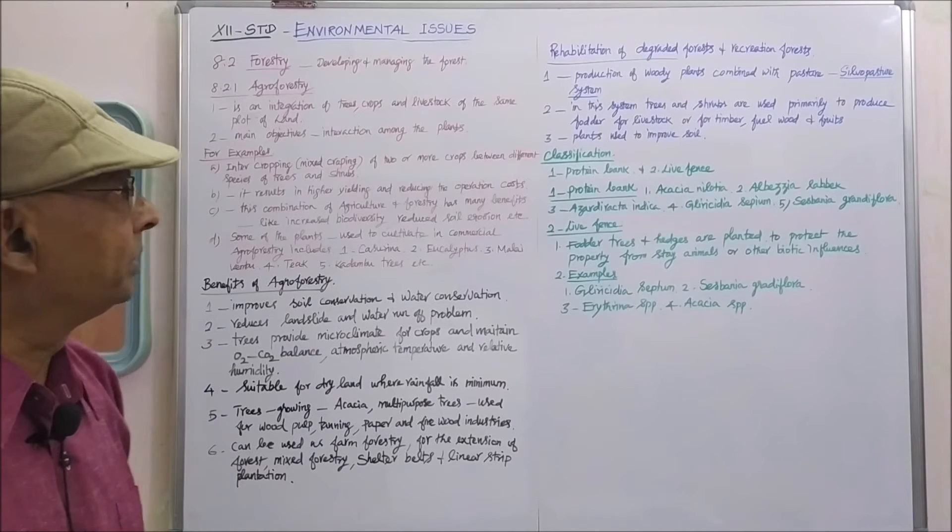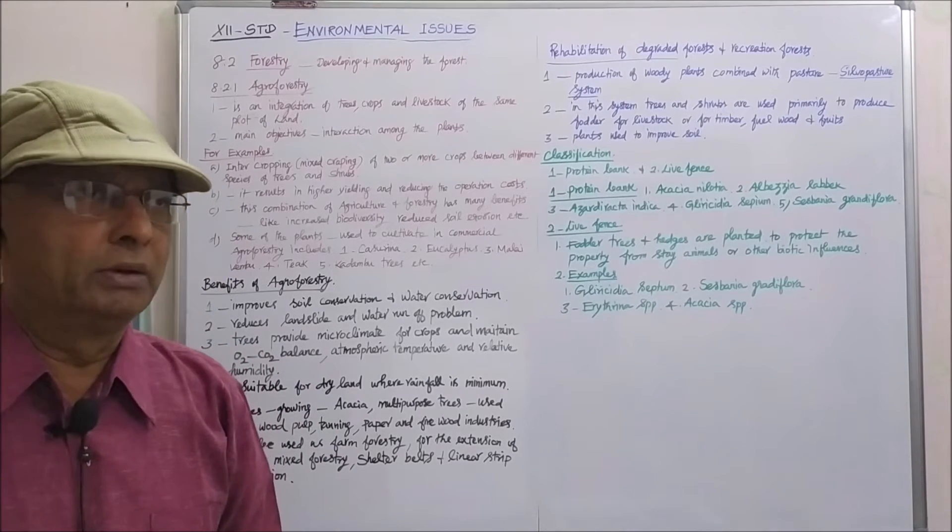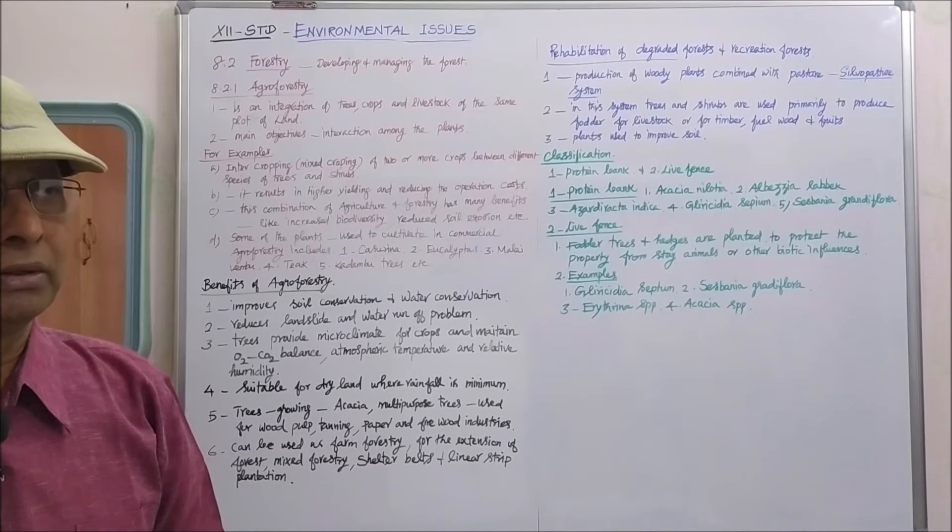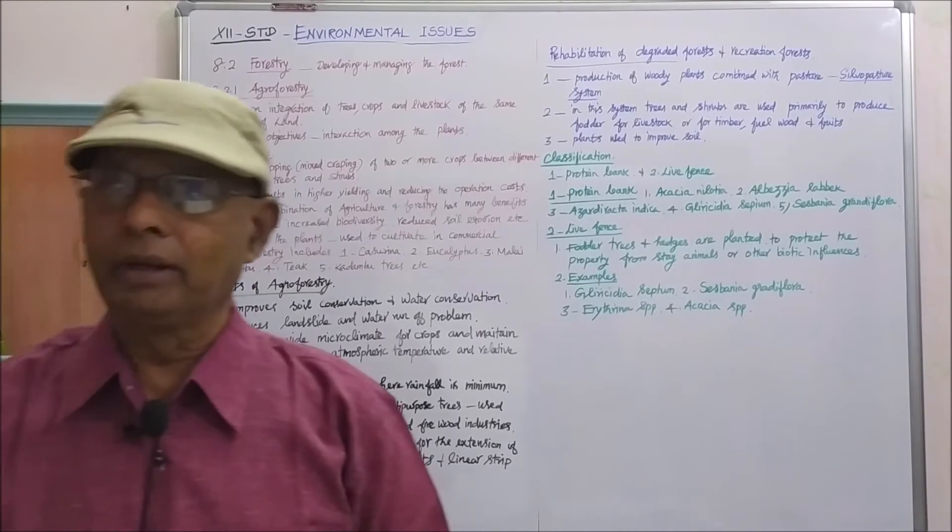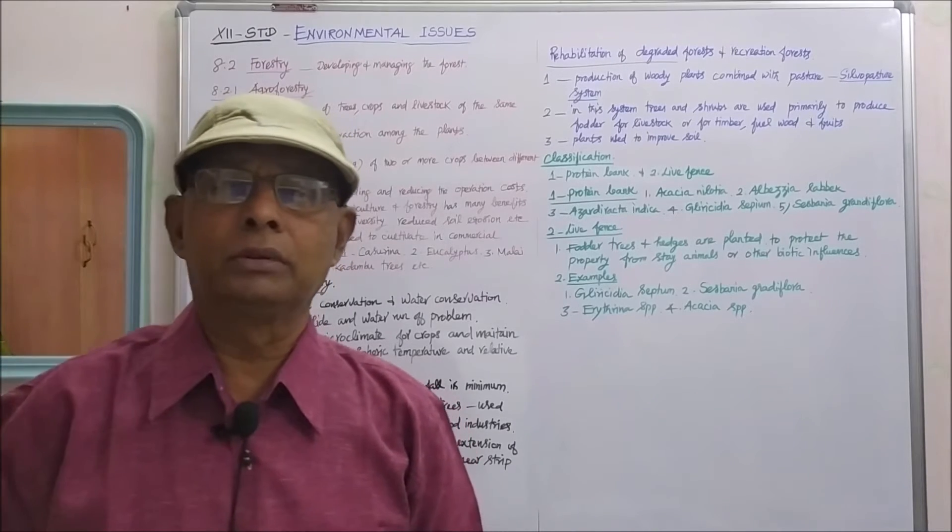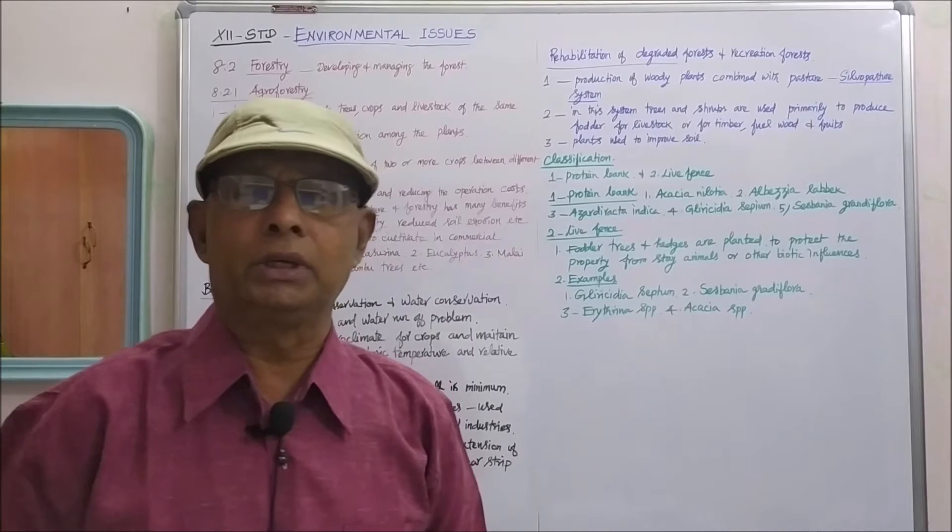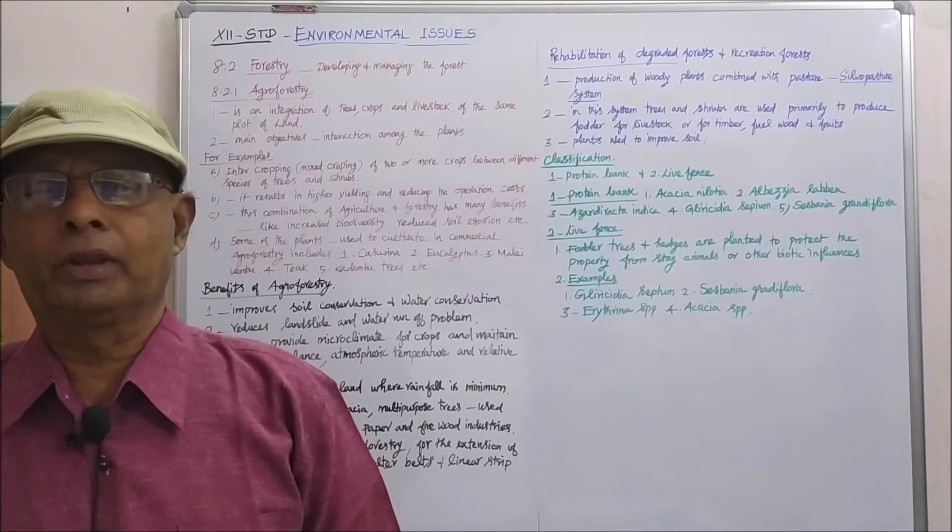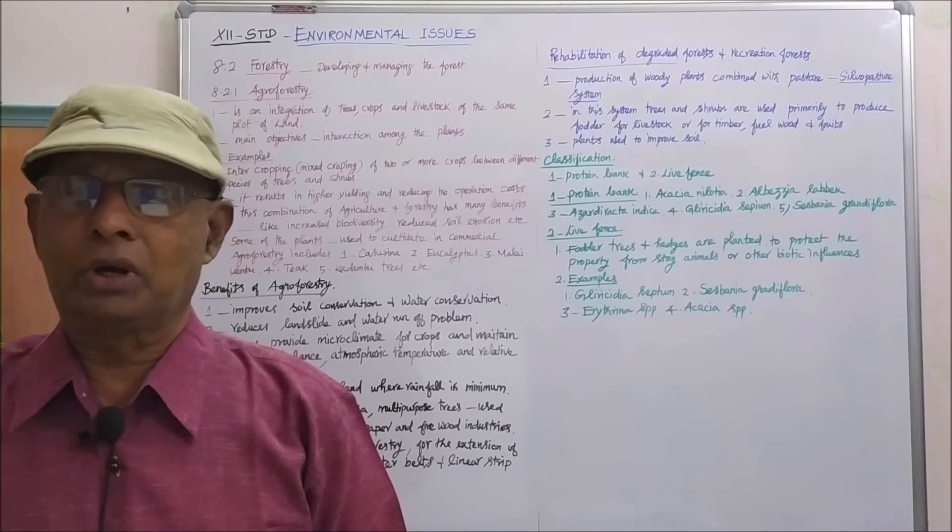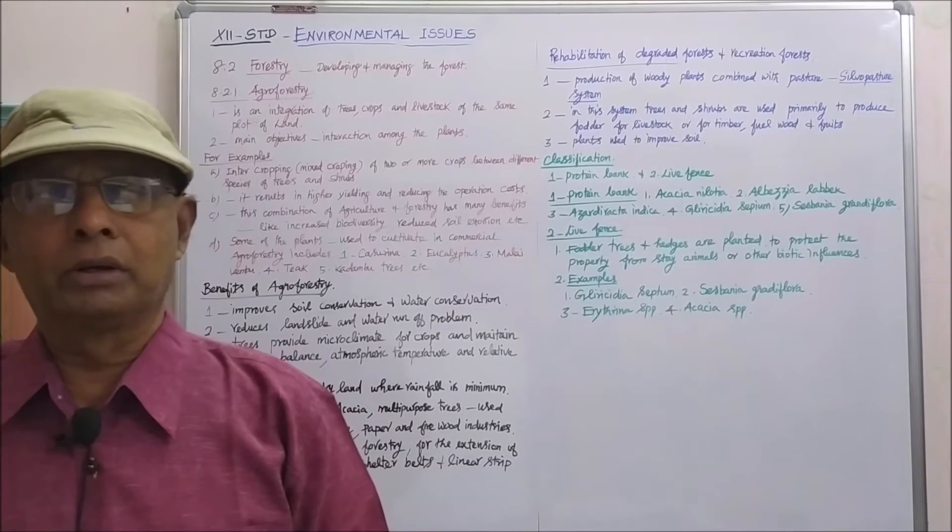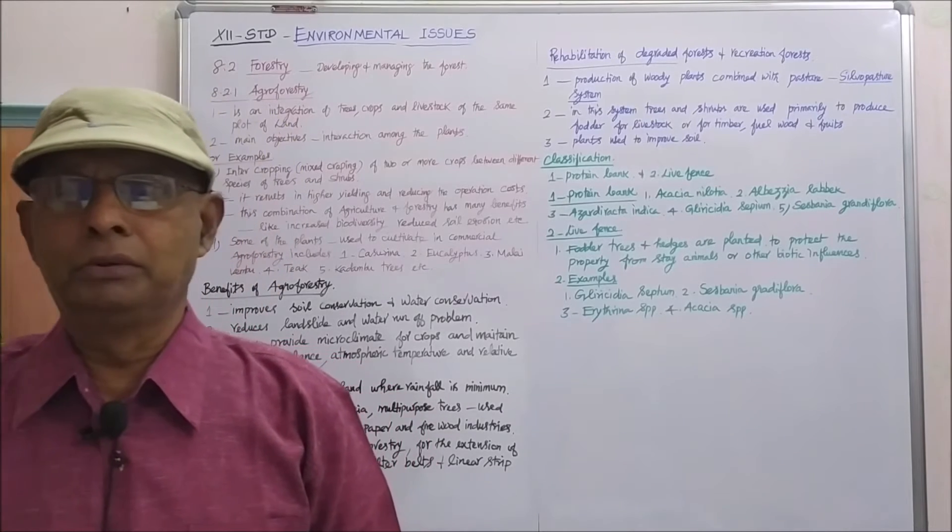Now we will pass on to the rehabilitation of degraded forest and recreation forest. When the forest is damaged, when the forest is totally unfit, those forests will be rehabilitated and that will be brought to the right path. The production of woody plants combined with pasture is referred as silvopasture system. In this system, trees and shrubs are used primarily to produce fodder for livestock or they are grown for timber, fuel, wood and fruits. Plants are also used to improve the soil.